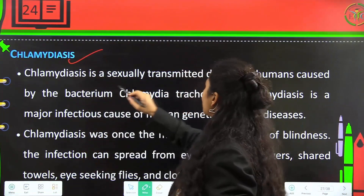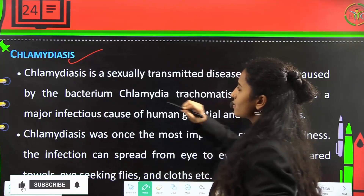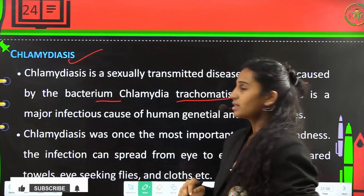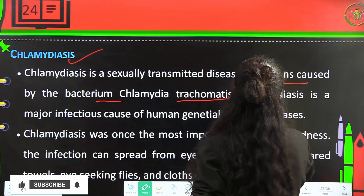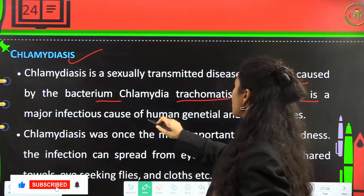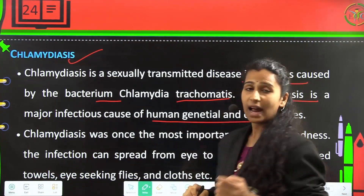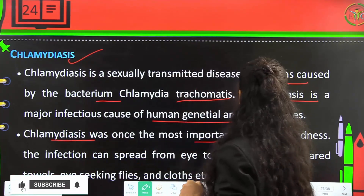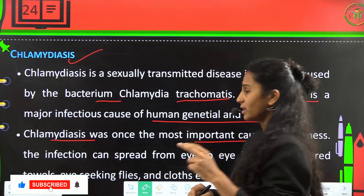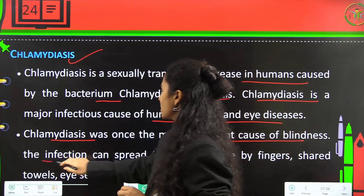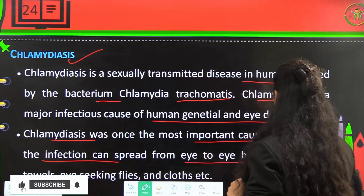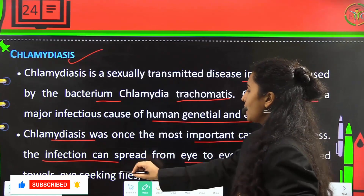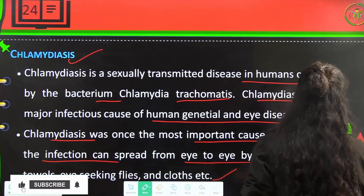Chlamydiasis is a sexually transmitted disease in humans caused by the bacterium Chlamydia trachomatis. It is a major infectious cause of human genital and eye diseases and was once the most important cause of blindness in humans. This infection can spread from eye to eye by fingers, towels, eye-seeking flies, and clothes.